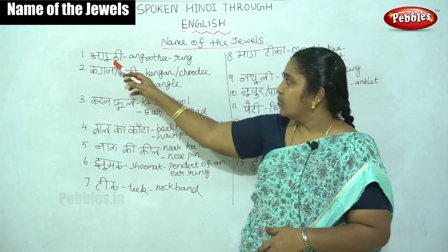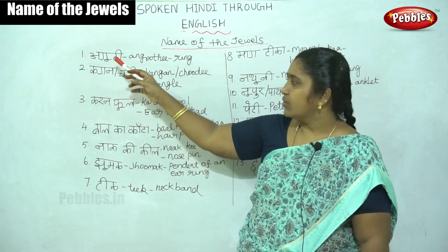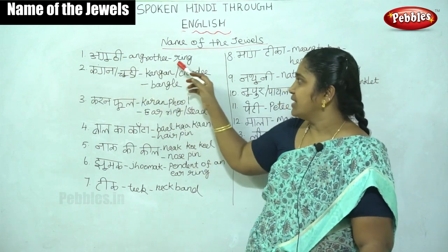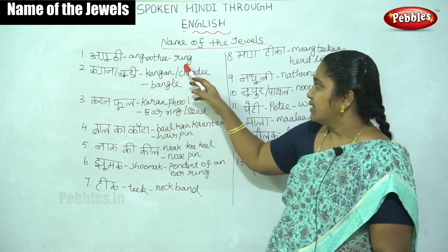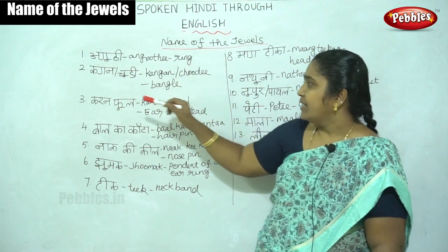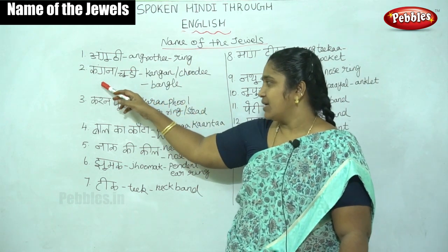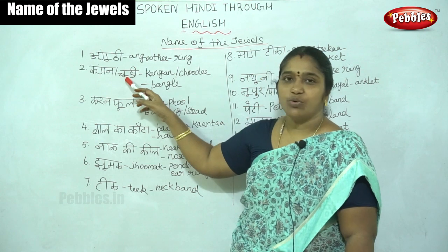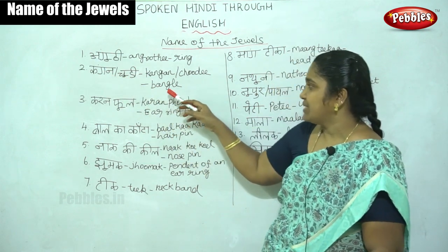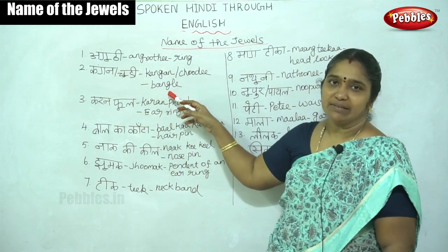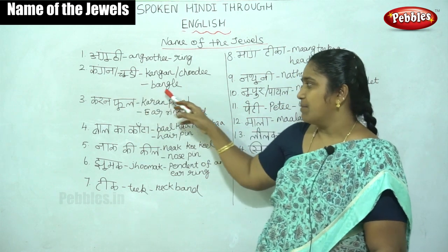The first one is Anguti. Anguti is ring. Then Kangan — Kanganchudi. Kanganchudi means bangle.